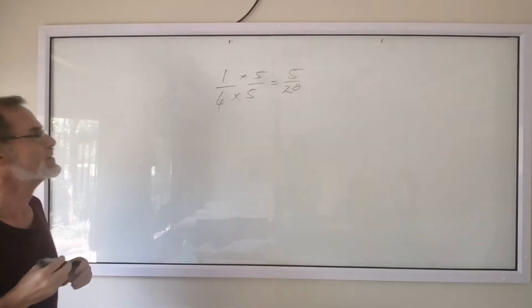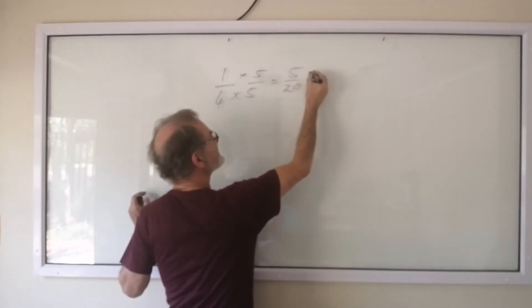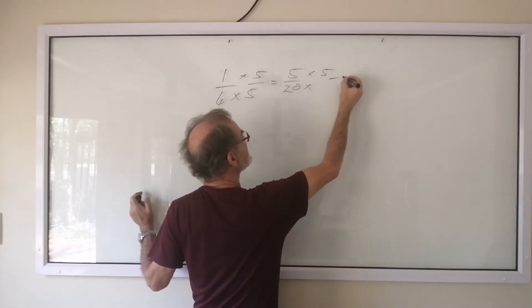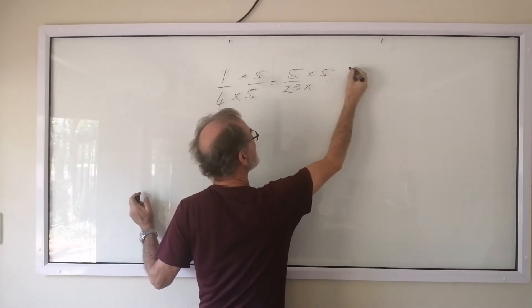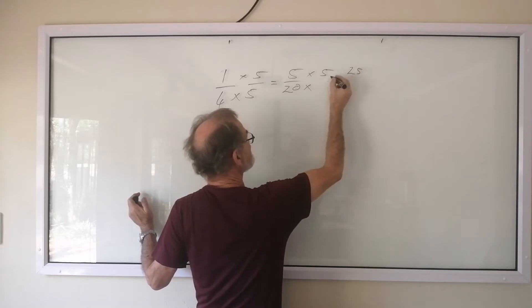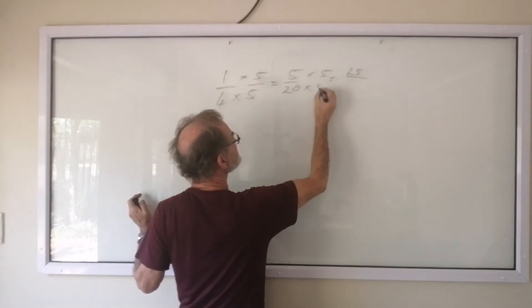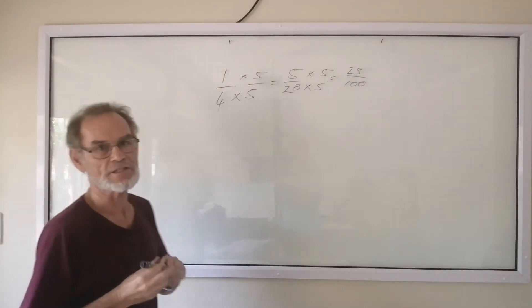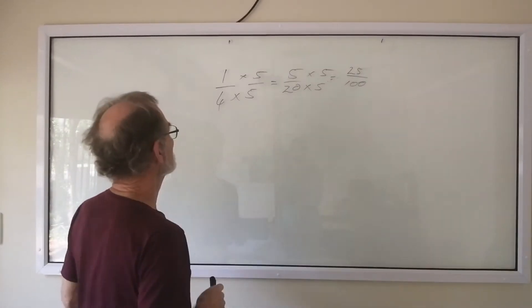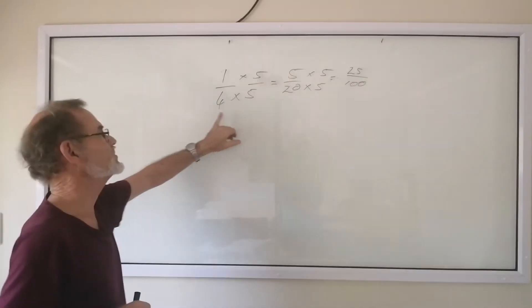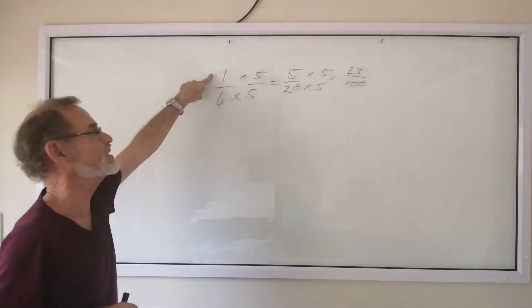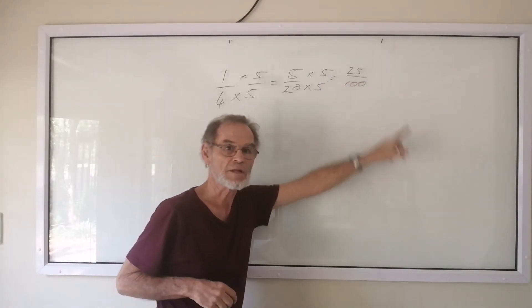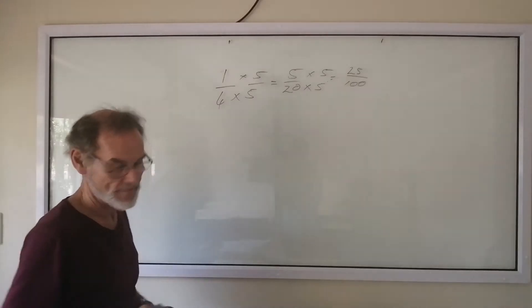This is a quarter. We can multiply this again by something. Let's do 5 again. 5 times 5 is 25, and 5 times 20 is 100. It is still a quarter. I haven't really changed anything. All I've done is, instead of cutting the pizza into 4 pieces and eating 1 piece, I've cut the pizza up into 100 pieces and eaten 25 of the pieces. But I haven't actually changed anything.